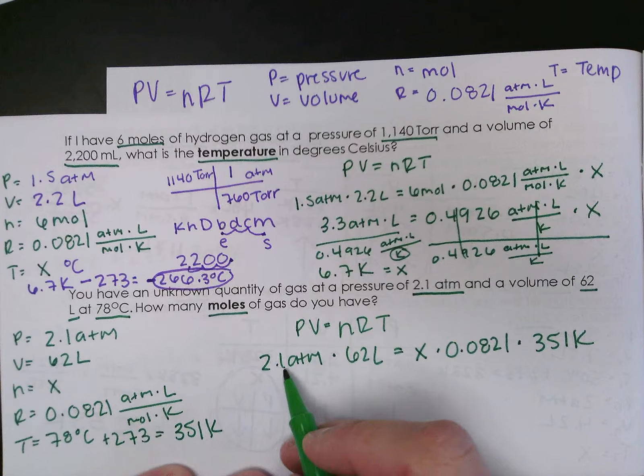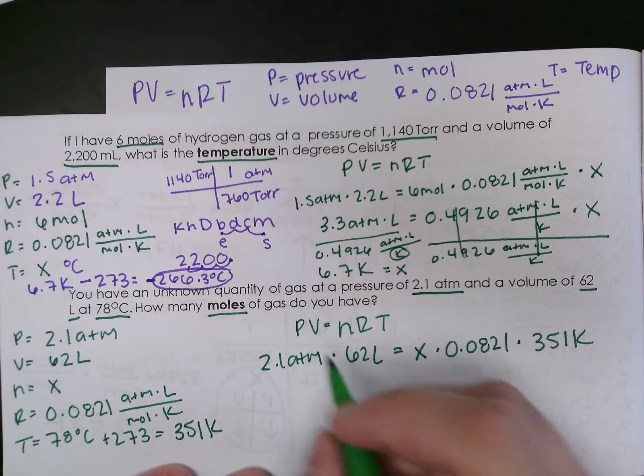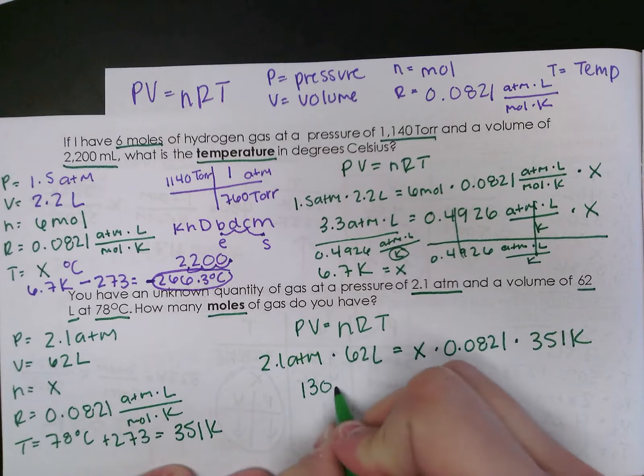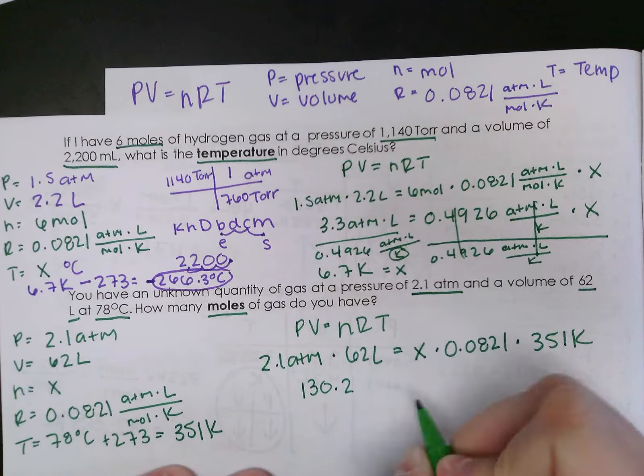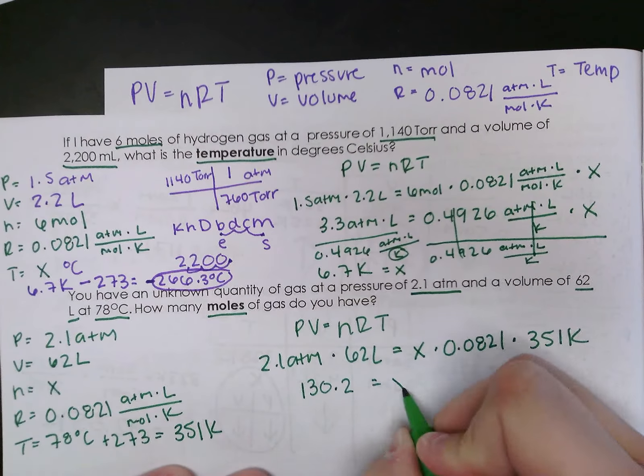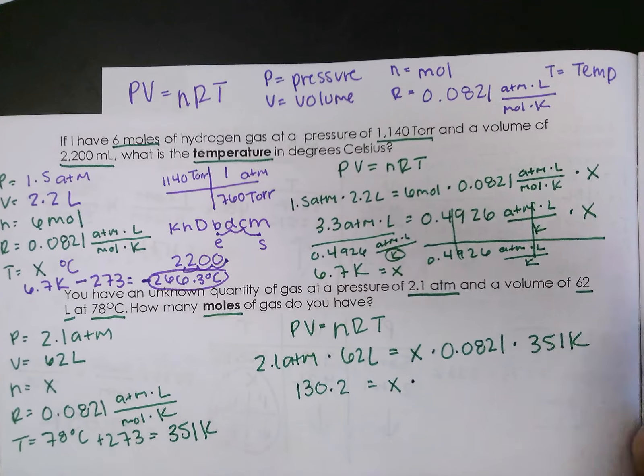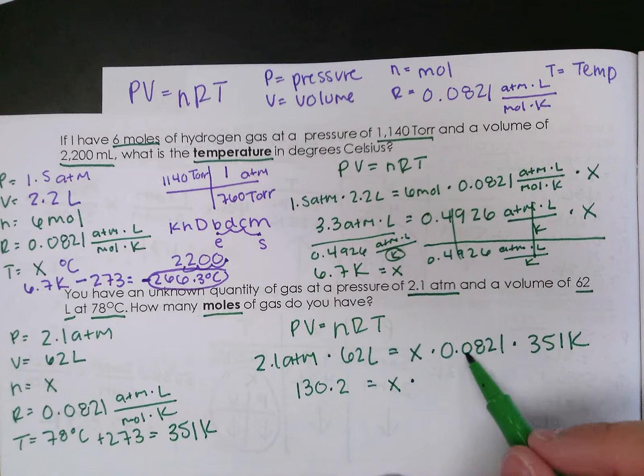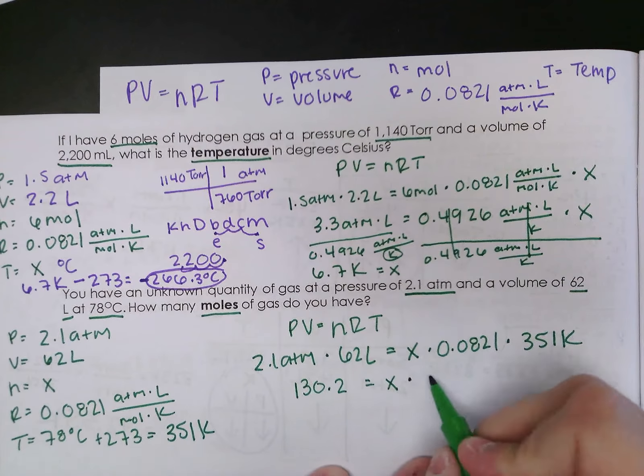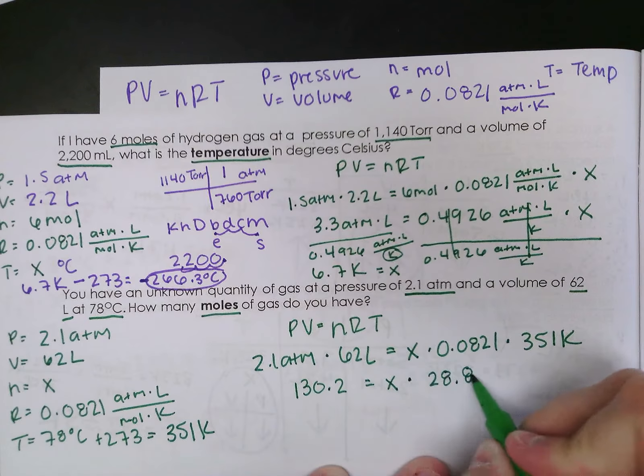So I'm going to multiply 2.1 times 62 to simplify that side. And I get 130.2. I'm just going to bring my X down, because I can't do anything with it yet. And I'm going to simplify this side. So when I multiply these two together, I get 28.82.